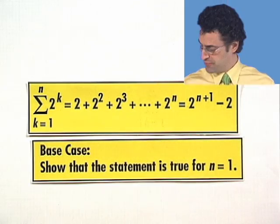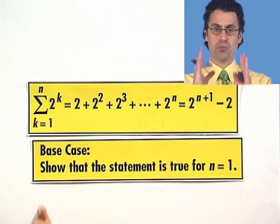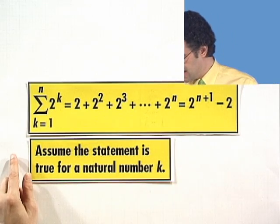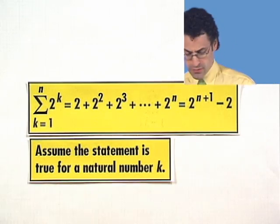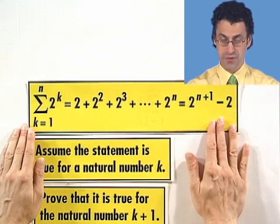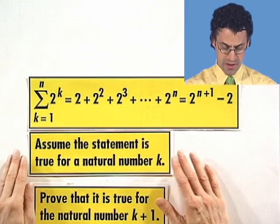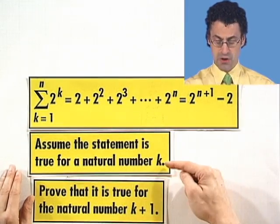Now we have to verify that in fact if one domino falls down somewhere, the next domino must fall down. That means we have to make an assumption. So we have to assume that the statement is true for some particular natural number k, and what we want to do is we want to prove that the statement is true for the next one.